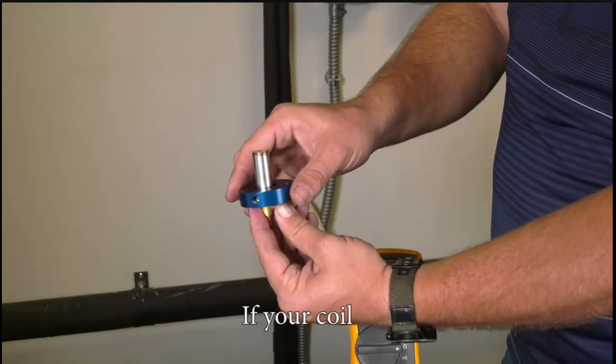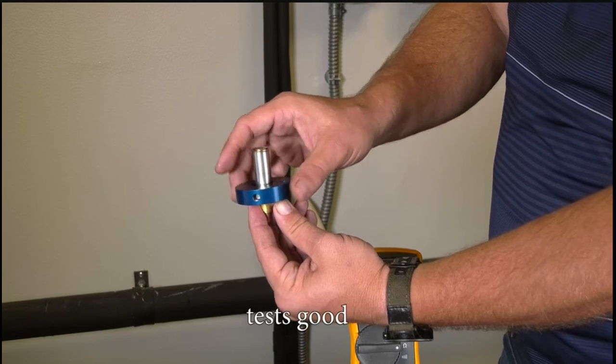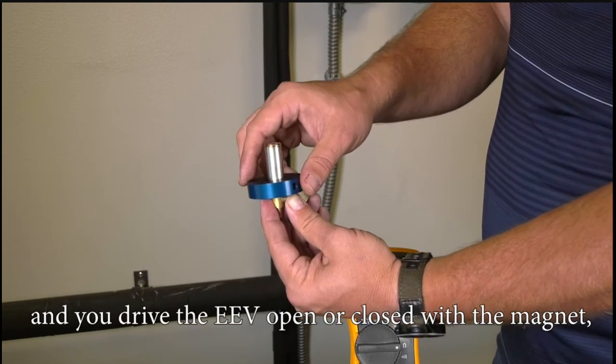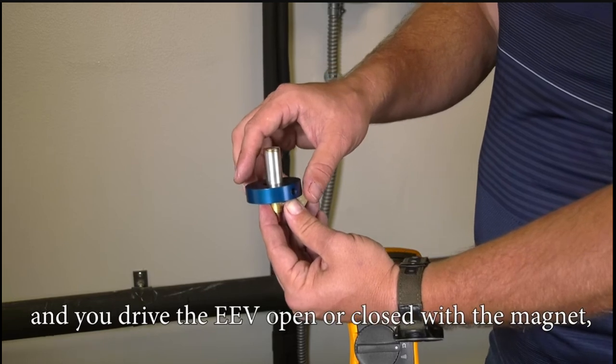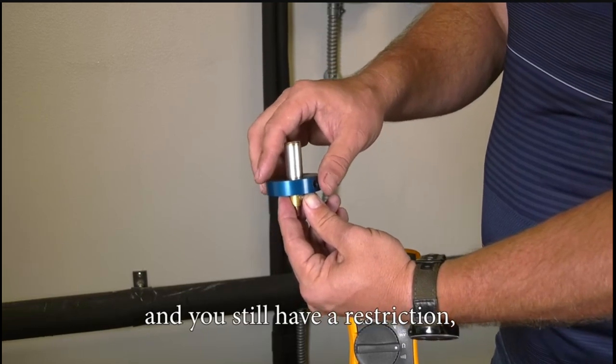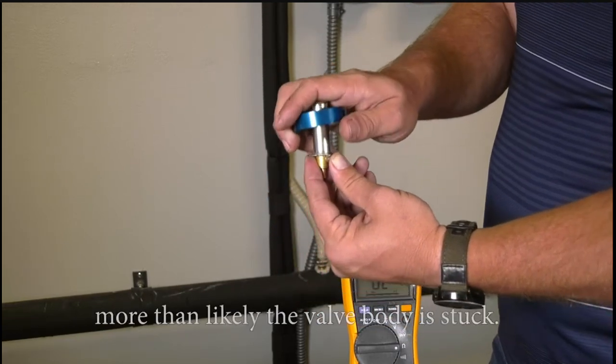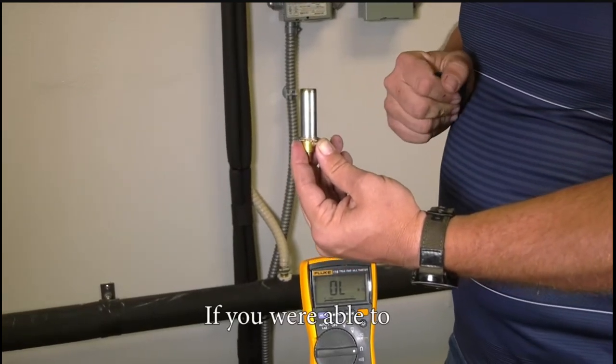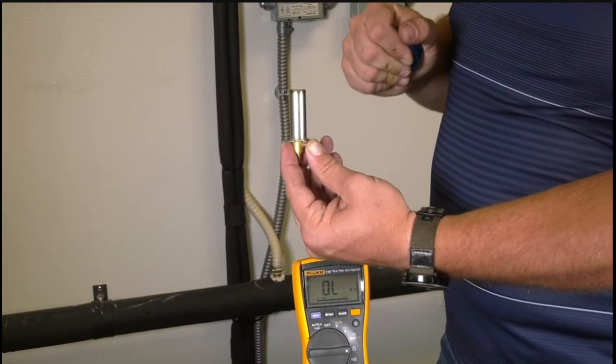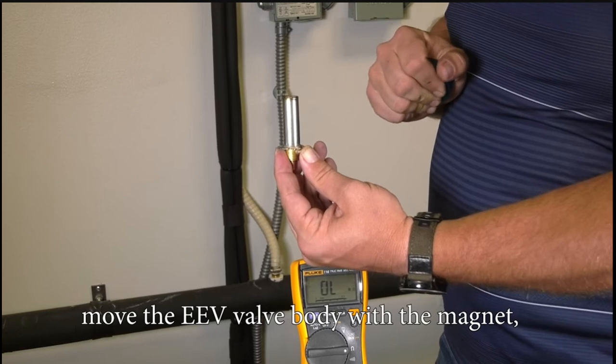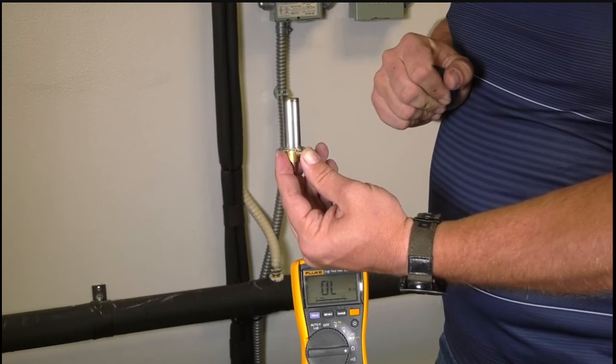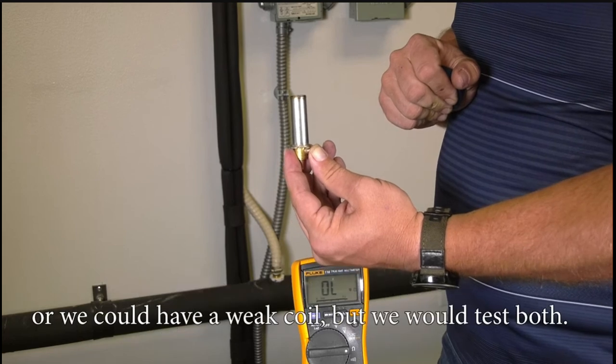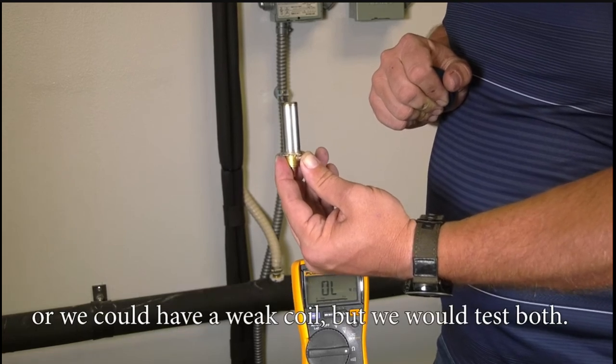If your coil tests good and you drive the EEV open or close with the magnet and you're still having a restriction, more than likely the valve body is stuck. If you were able to move the EEV valve body with the magnet, it could be something else down the line that could be restricting it, or we could have a weak coil, but we would test both.